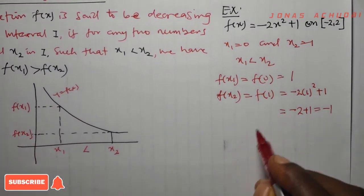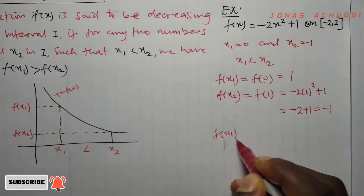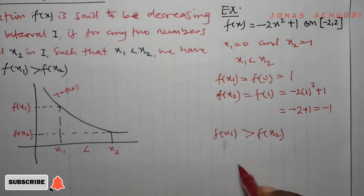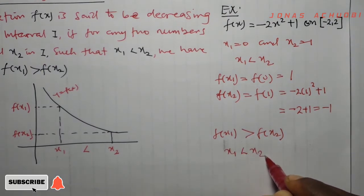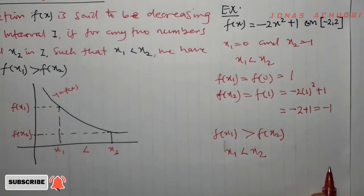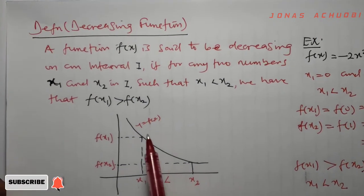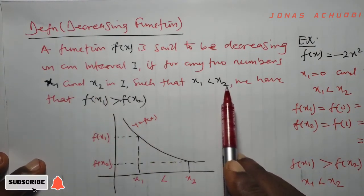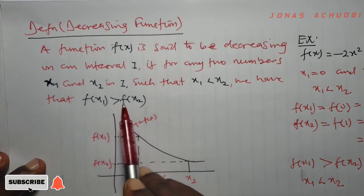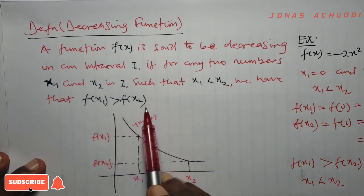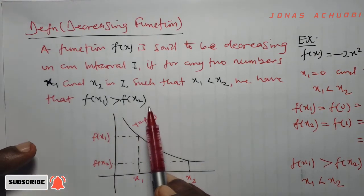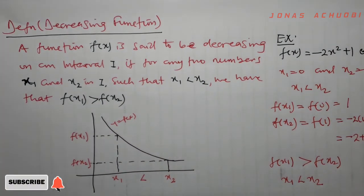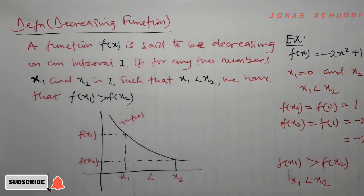What do we observe? We observe that f of x1 is greater than f of x2 when x1 is less than x2. From our definition, if x1 is less than x2 and f of x1 is bigger than f of x2, then the function is called a decreasing function. So we have now defined both an increasing function and a decreasing function.